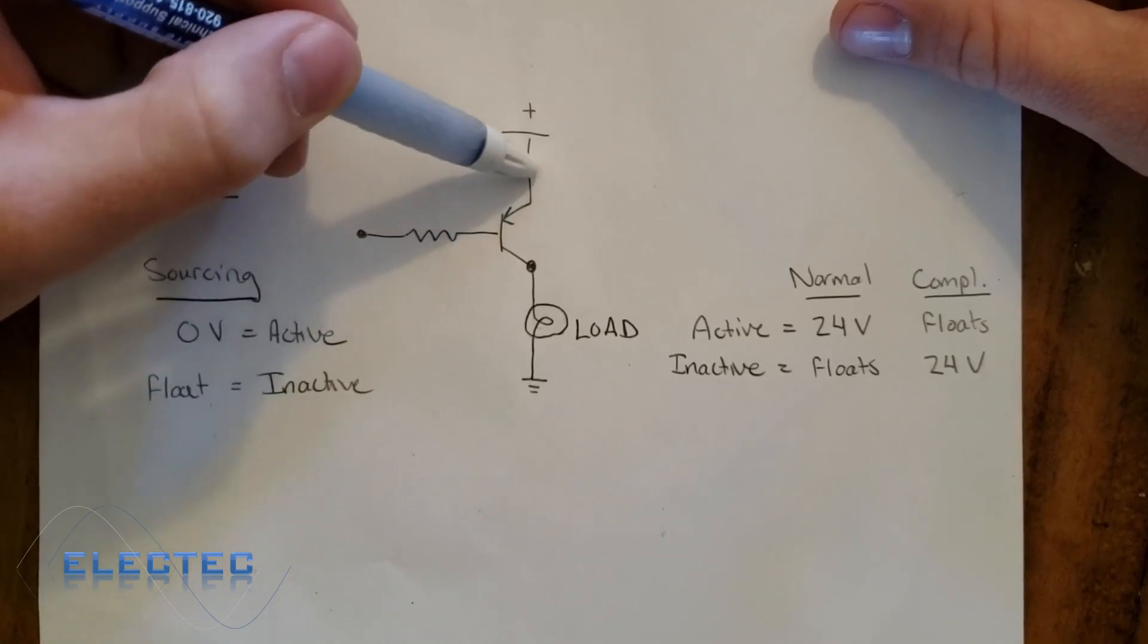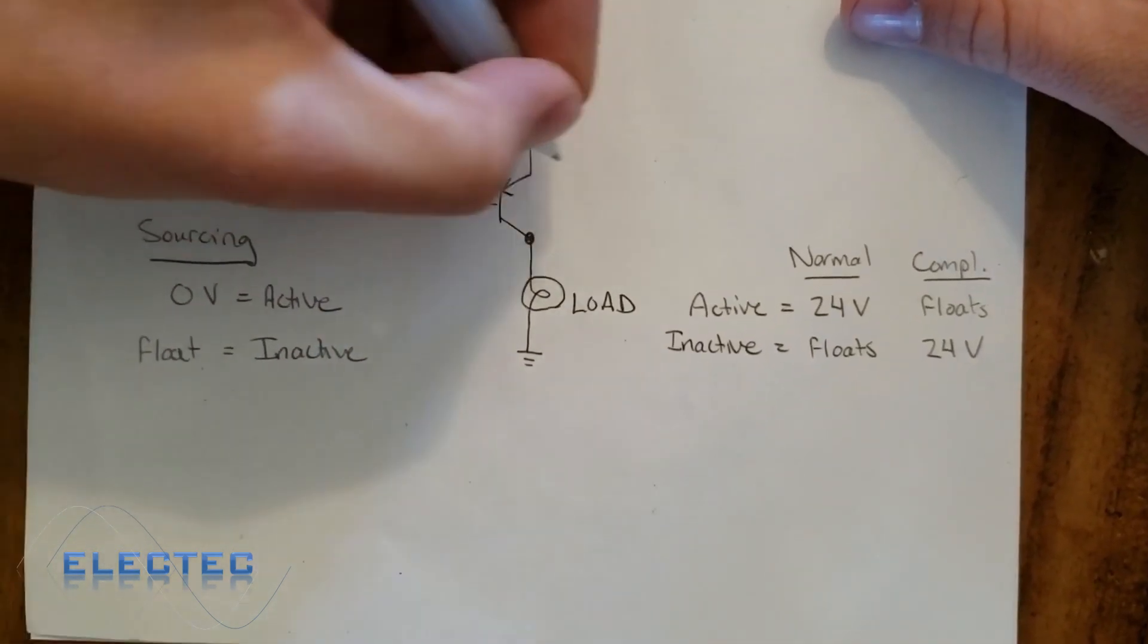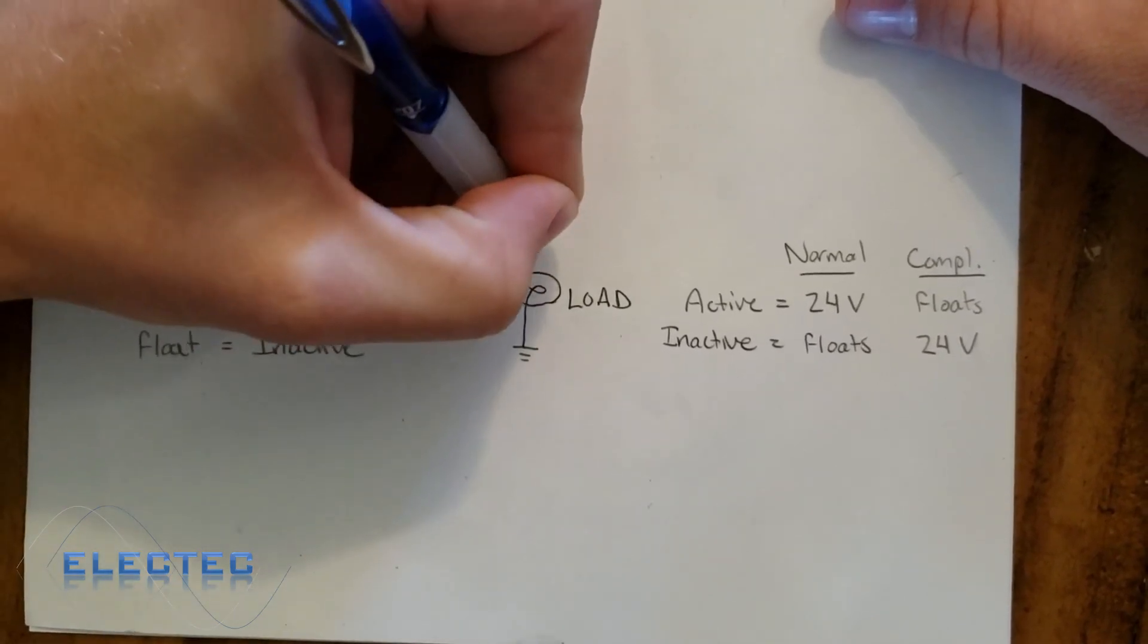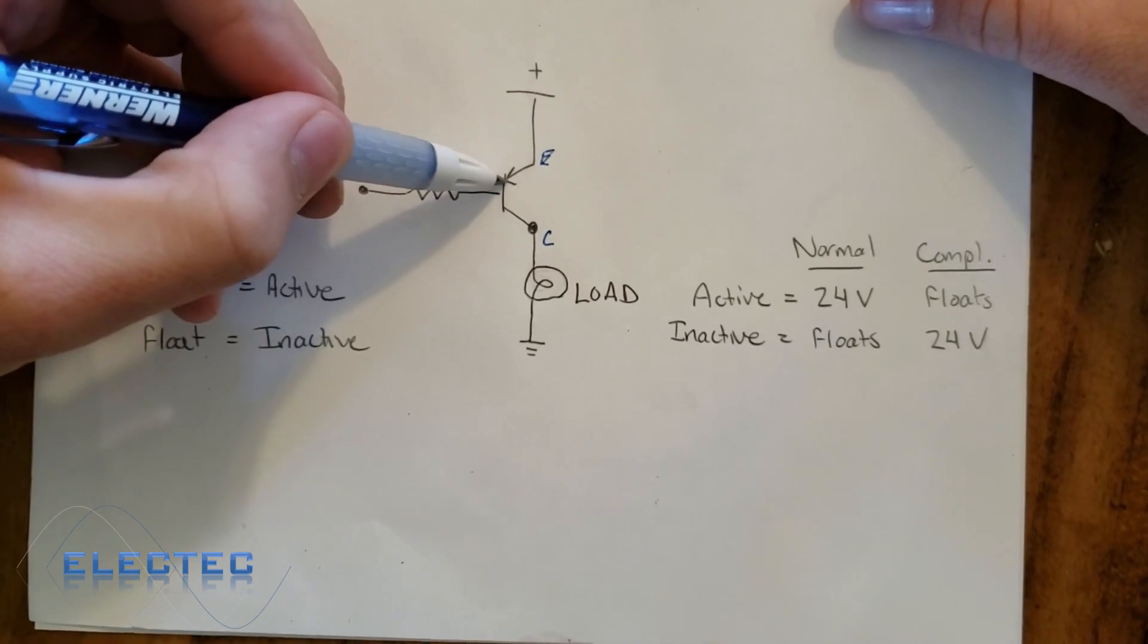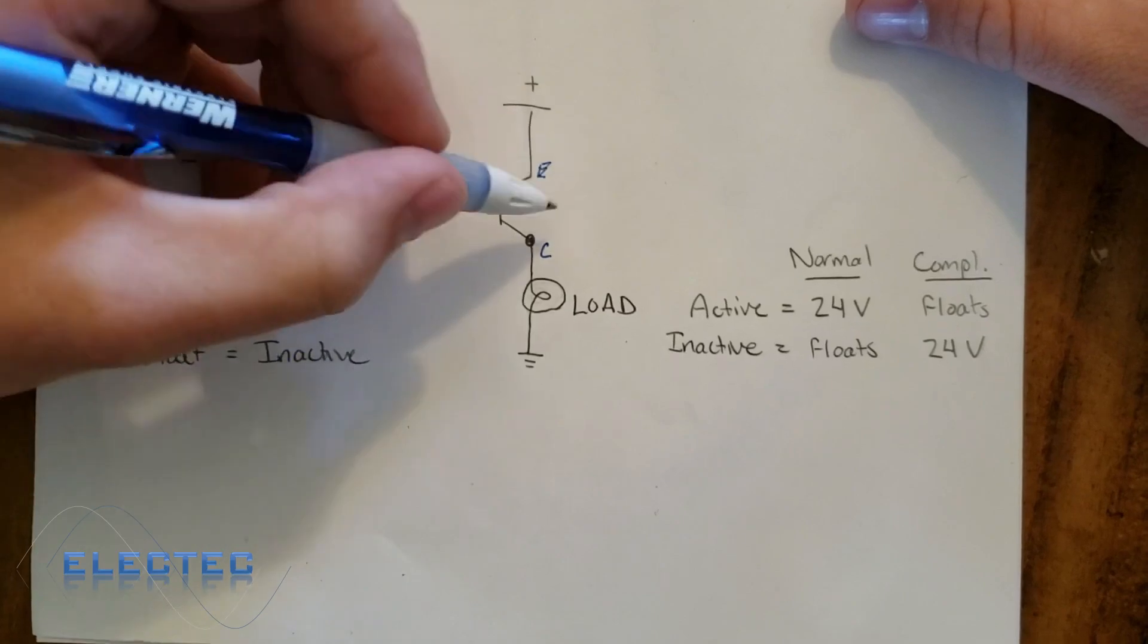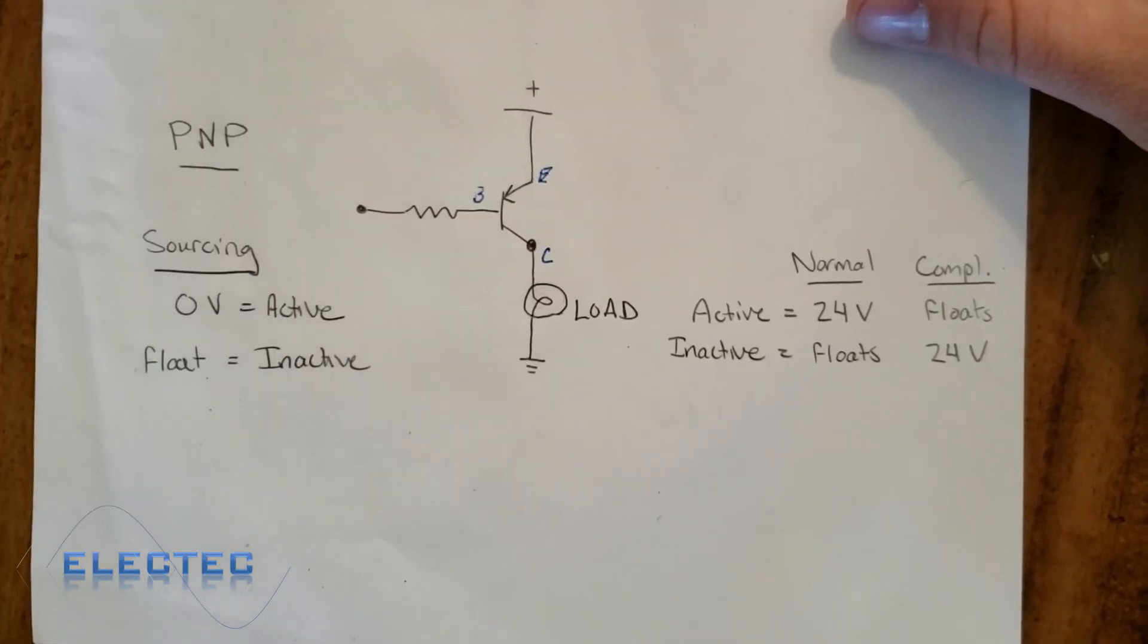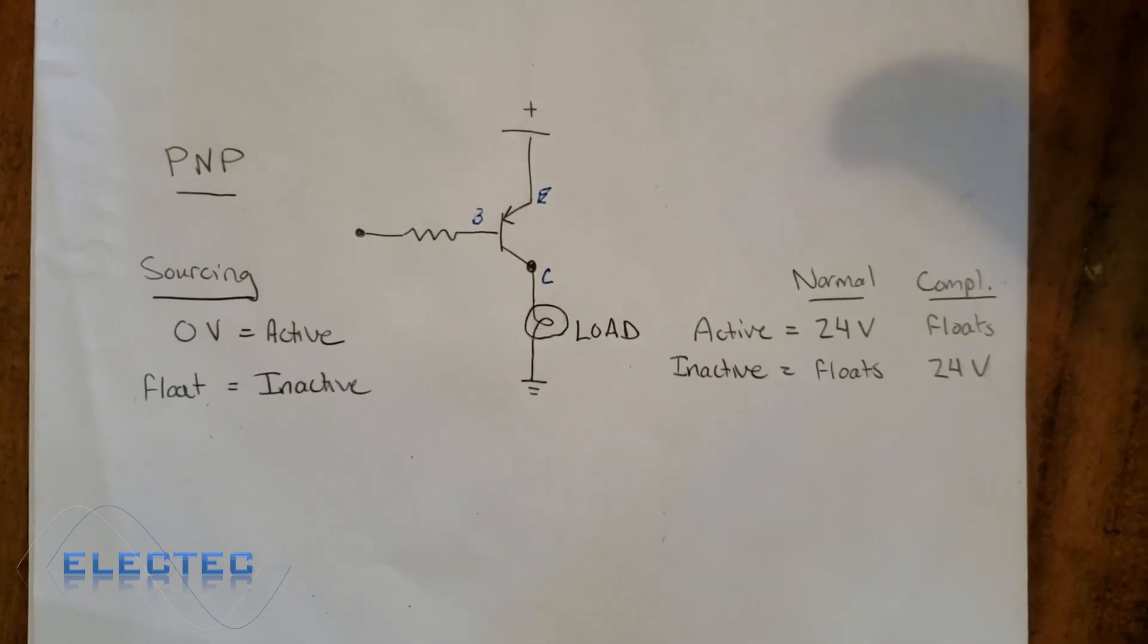What you need is a voltage drop on this base emitter junction right here. So in this sense, this is the base, this is the emitter, and this is the collector. The emitter is always on the side with the arrow on it, and the base is always this right here. Sometimes on these transistors, you'll see a circle drawn around also. It's the same thing. It's a bipolar junction transistor.